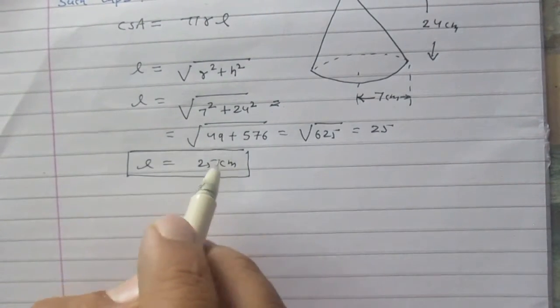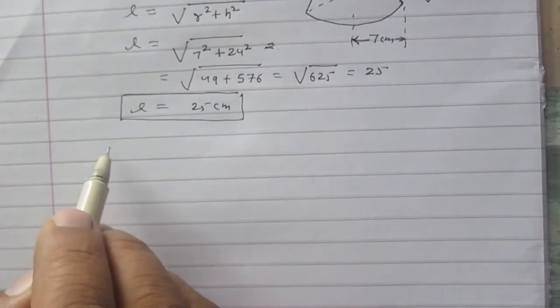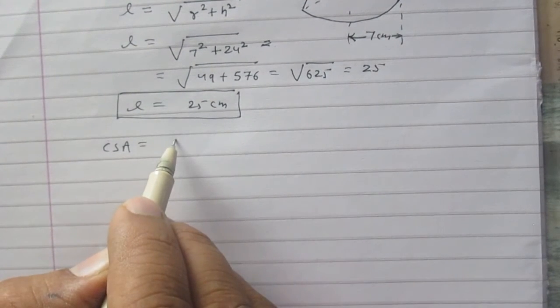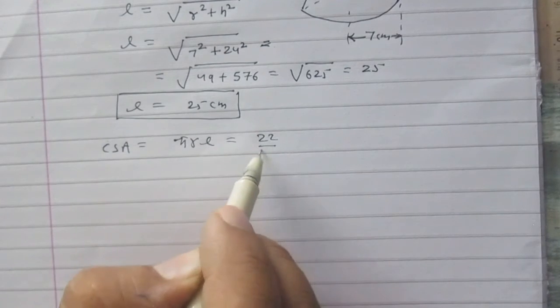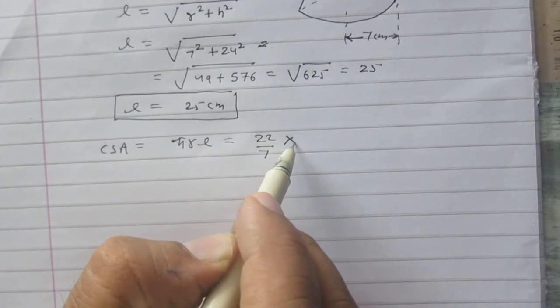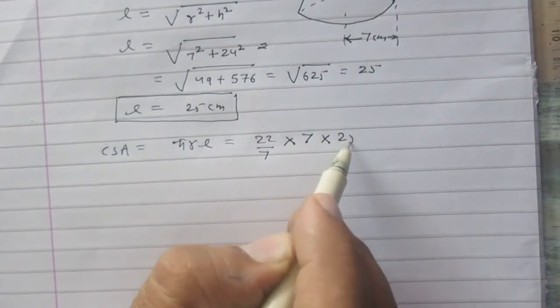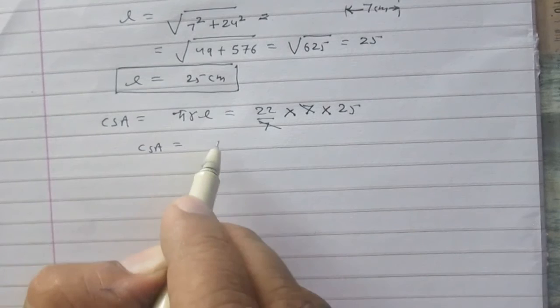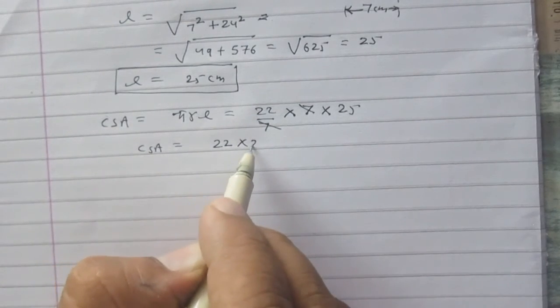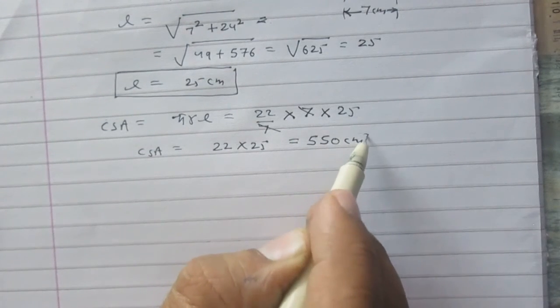Now using this relation, curved surface area of the cone is πRL. So it is (22/7) × 7 × 25. The radius of the base of the cone is 7 and L is 25. So curved surface area of this cone is 22 × 25, which is 550 cm².